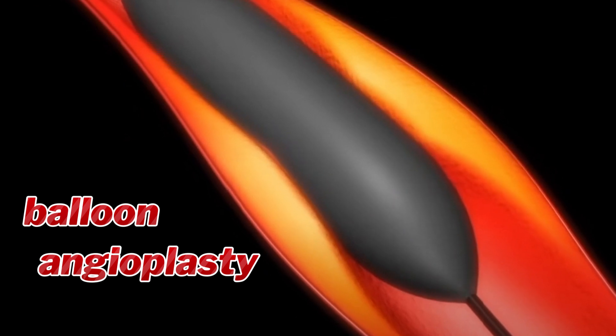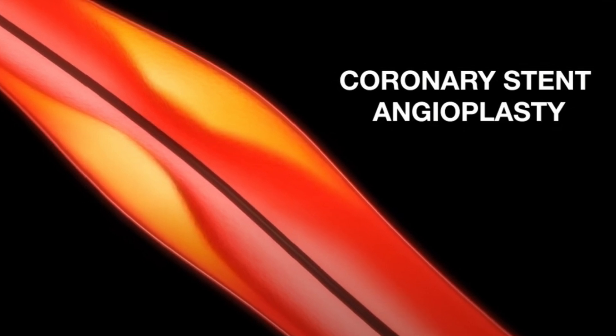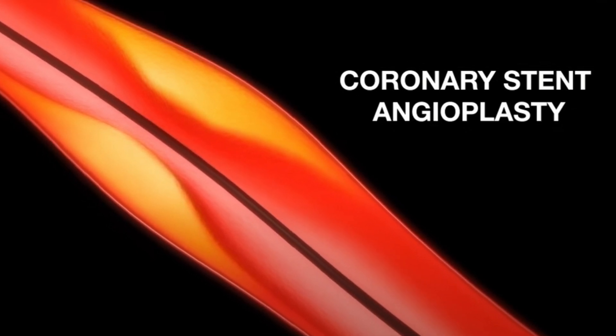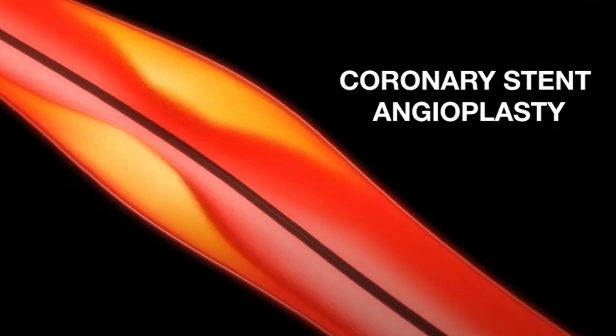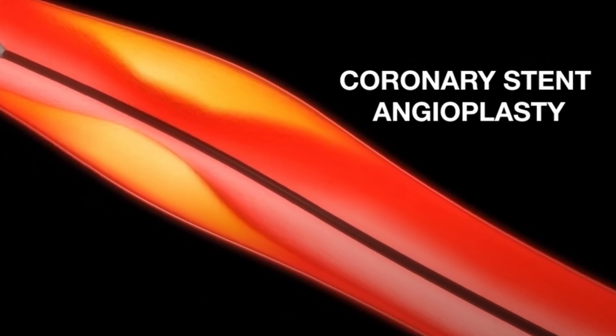After the blocked vessel is reopened, the deflated balloon catheter is withdrawn from the artery. The same treatment procedure is repeated in the case of multiple blockages. Most patients may also receive a coronary stent, which is a small tube made of wire mesh designed to keep the artery open once it has been treated.